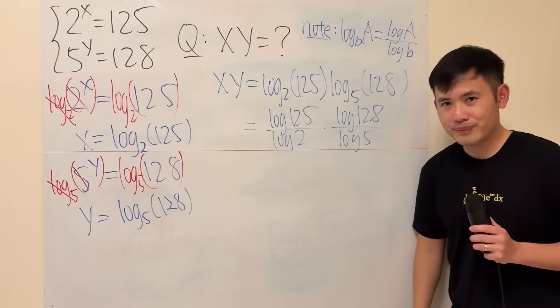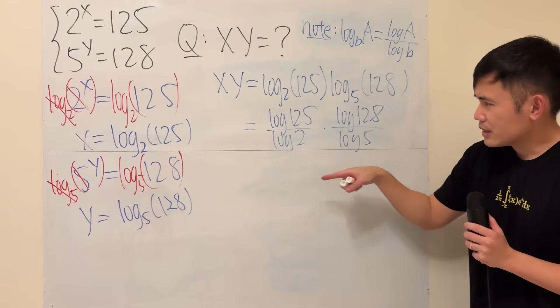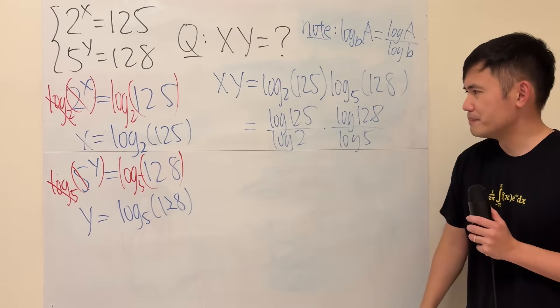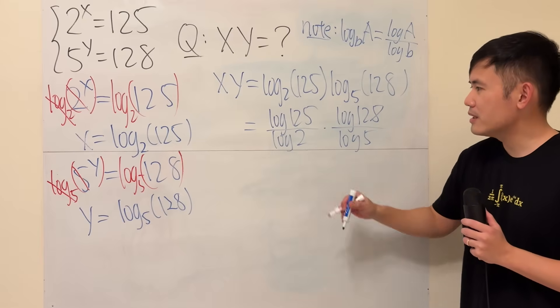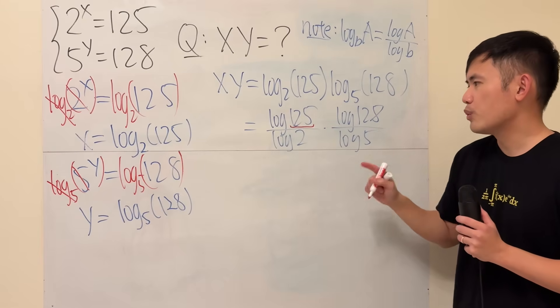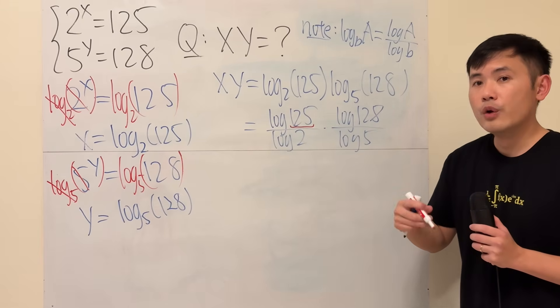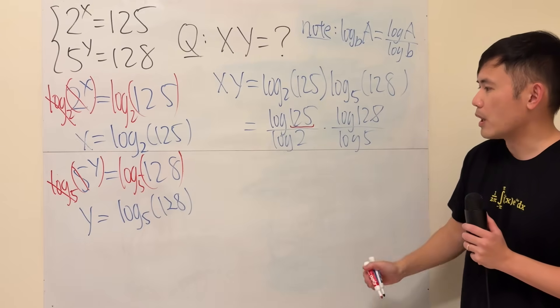Okay, now what though? They all have the same base log. Well, the key right here is that, notice this right here, 125, it's the same as 5 times 5 times 5. We can rewrite it as 5 to the third power.